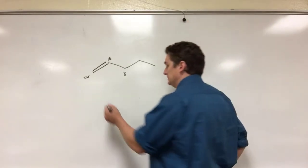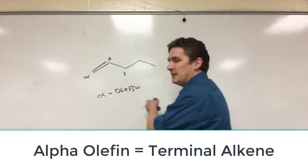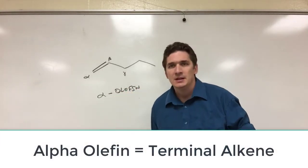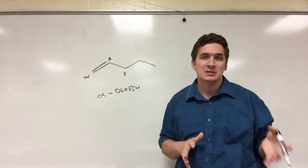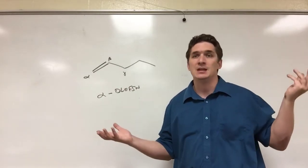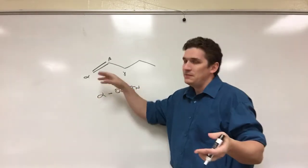What does that mean? If we start on the end of the branch and number them with letters instead of numbers—because if you're going to ignore what we normally do, get rid of the numbers—an alpha olefin is one where we have a terminal alkene sitting at the end of the chain.